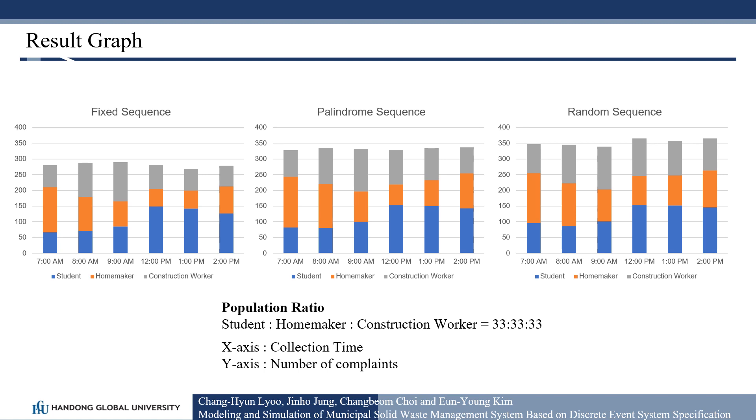The graphs show the simulated number of complaints filed by a population with an equal composition of students, homemakers, and construction workers served by a garbage truck following each strategy. Among all experiments, the average civil complaint of fixed sequence was the smallest.